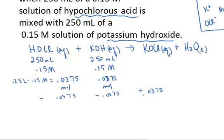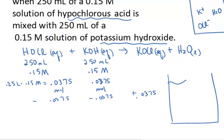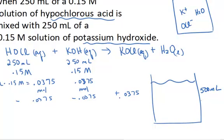So now we want to know what is the pH of the solution. In this particular solution, I've mixed 250 milliliters of the acid and the base, so the total solution volume is 500 milliliters. I have in solution the soluble salt — potassium hypochlorite — and of course water. I have 0.0375 moles of the salt, so that means 0.0375 moles of potassium and 0.0375 moles of the hypochlorite anion.